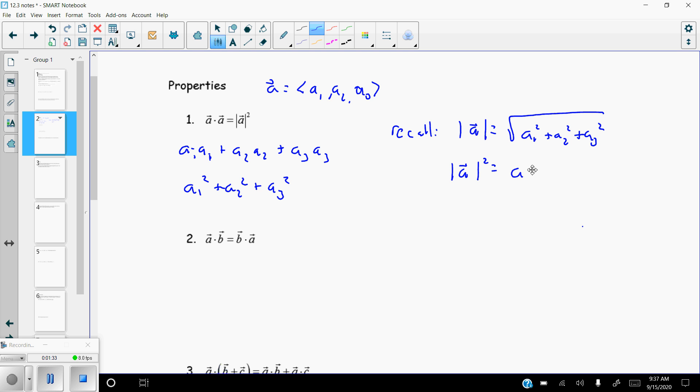I get a1 squared plus a2 squared plus a3 squared, which is exactly the same as the dot product of itself. So that does show that a vector dotted with itself is just the magnitude of that vector squared.